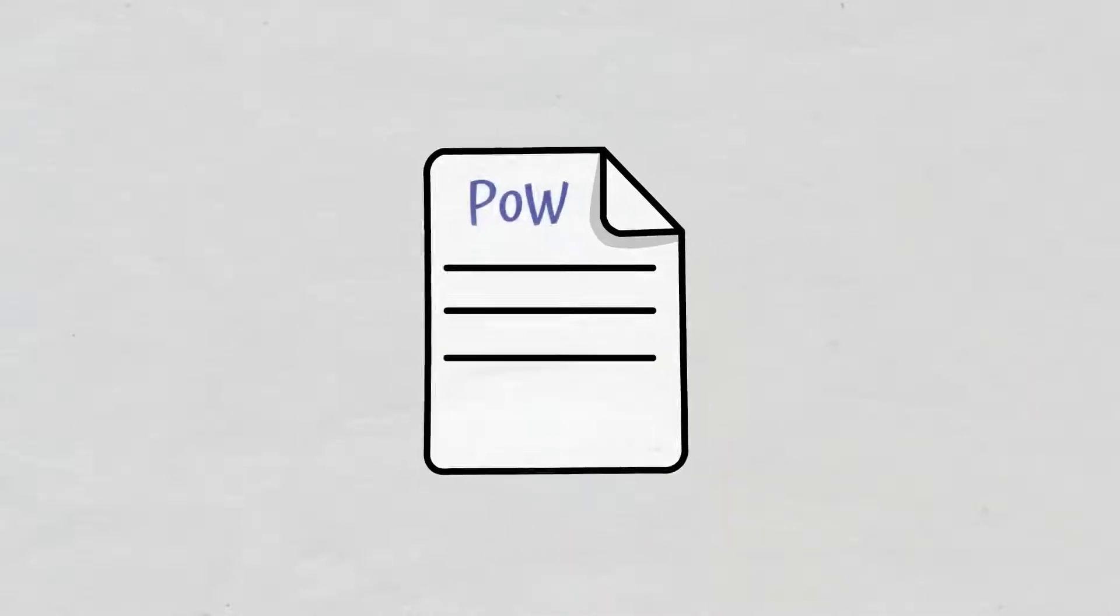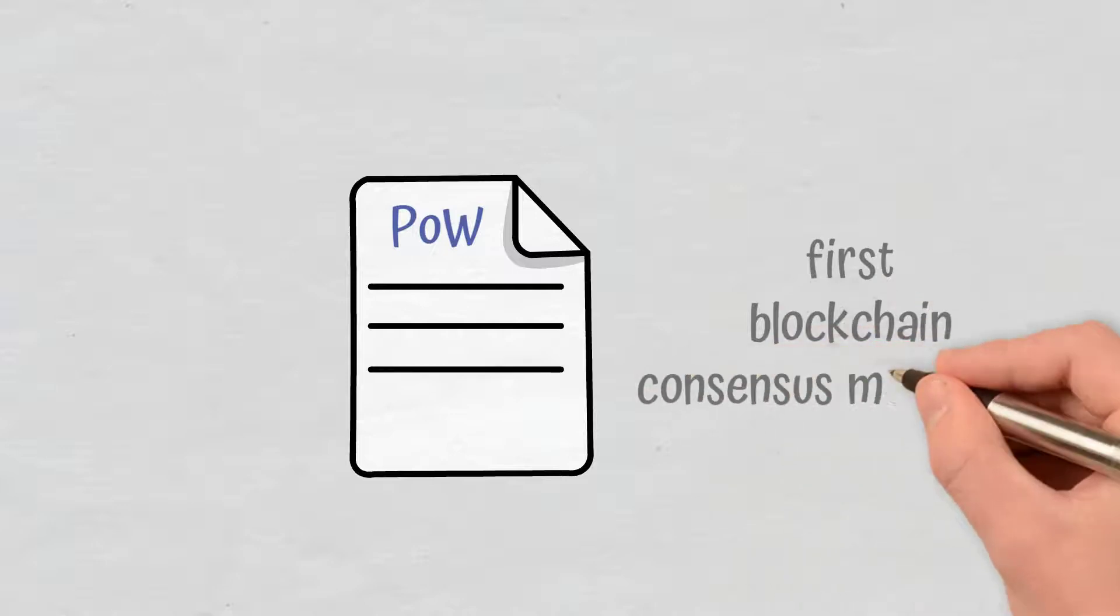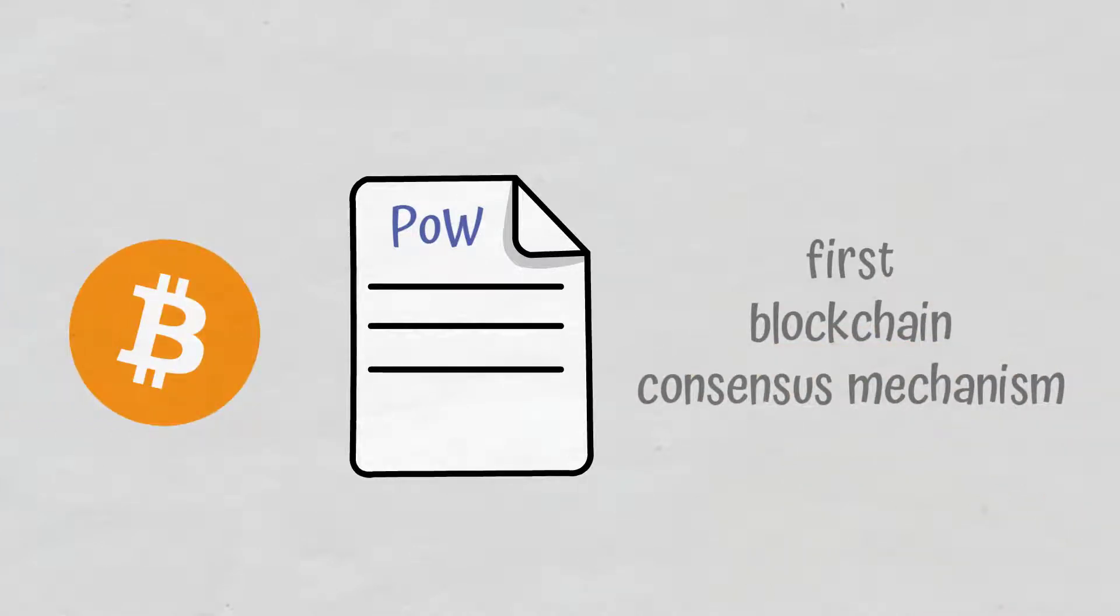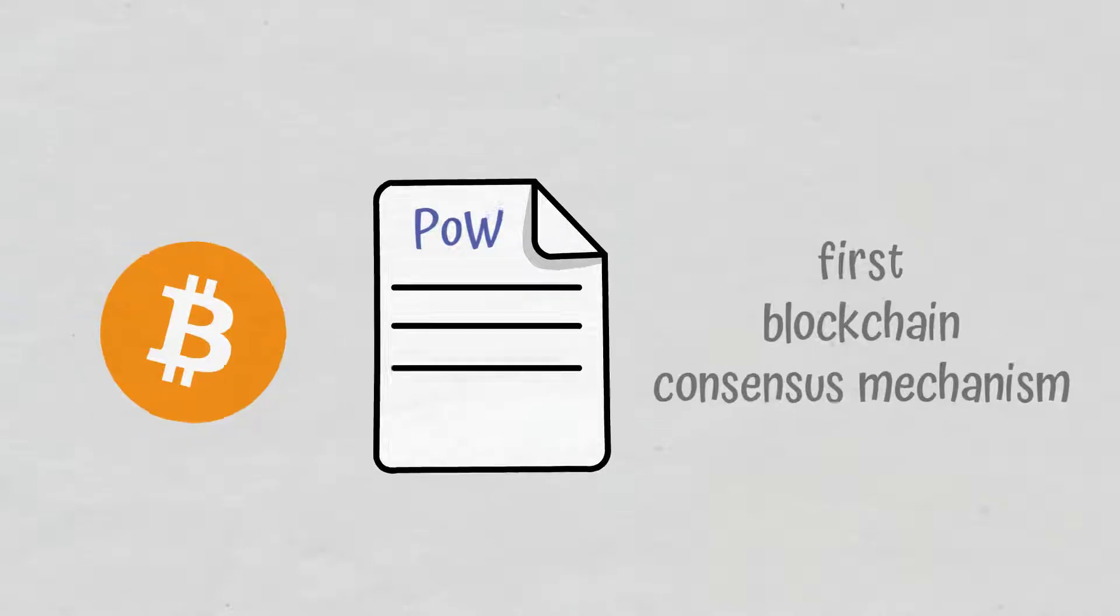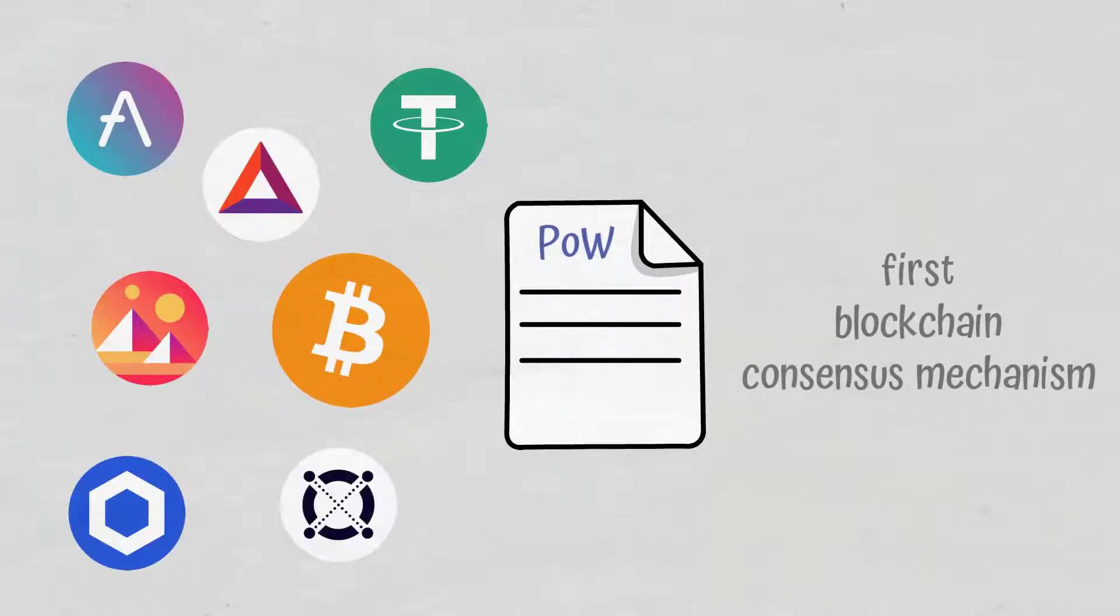Proof of Work represents the first blockchain consensus mechanism, and Bitcoin was the first one to use it. Since then, many cryptocurrencies have decided to use this type of consensus mechanism as well.